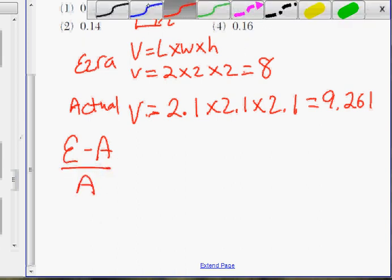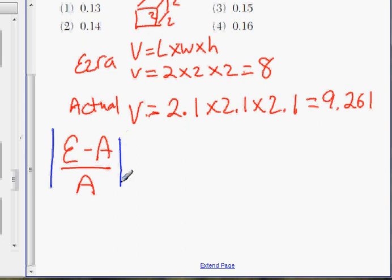We're going to take the absolute value of whatever the answer is. Because when we're measuring something, relative error can be a negative error. So in this case, let's plug in numbers.